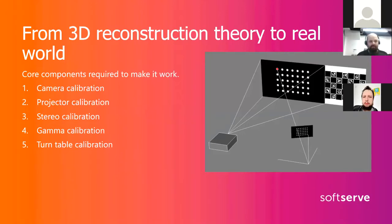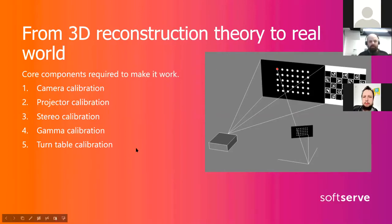Basically the first steps are to calibrate a camera and projector, to make a stereo calibration for the camera-projector pair, to have rotation and translation parameters for the actual point cloud generation, and we also need the gamma calibration.